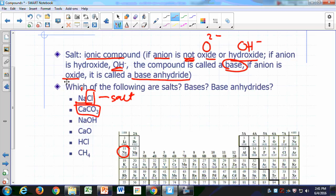How about calcium carbonate? That's a salt because calcium is a metal, so that means that's an ionic compound. And carbonate is not oxide, it's not hydroxide. So that's a salt. Calcium carbonate is chalk, chalk is a salt.